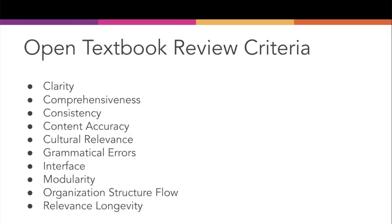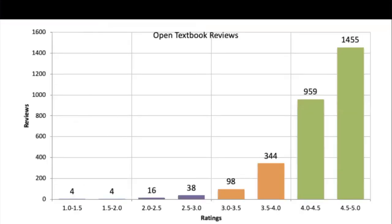Here are the review criteria — adapted from BC Campus. It's a list of all the different areas in which faculty write a review for a particular book. We consider this a light review, and it gives faculty checking out the book — and others who may come after them — a chance to get a sense of what's included and speak to its quality. You can see a breakdown of reviews in the library: the majority are well reviewed and well regarded by colleagues. There are a handful rated between one and two stars, but the vast majority are four to five stars.